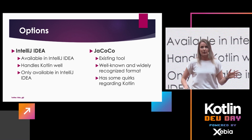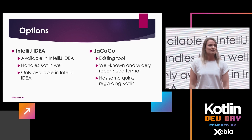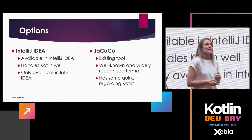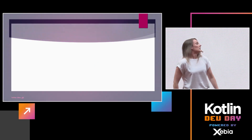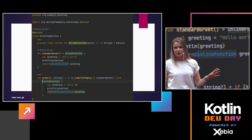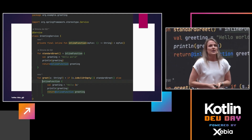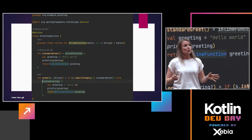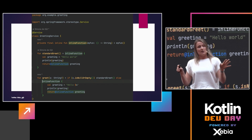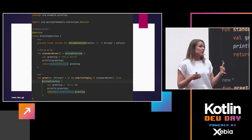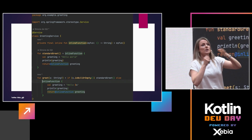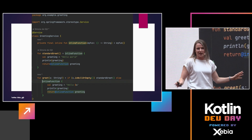Then we have JaCoCo — most of you might have heard of it, it's pretty well known. But it has some quirks with Kotlin. If you are using a lot of Kotlin-specific features, JaCoCo is likely to not catch all of your lines of code. For example, this dummy class has three methods: the first is an inline function that takes a lambda as an argument and returns a string; the second is a standard method with no input that calls the inline function and prints 'Hello World'; the third is a method with a nullable string input.